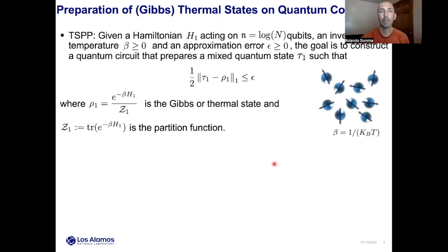We are also given an inverse temperature — a non-negative parameter beta — and an approximation error, a non-negative parameter epsilon, that you can think of as being small. The goal is to construct a quantum circuit, or a sequence of unitary operations, that prepares a mixed quantum state of those n-qubits, which we call tau1, such that it is epsilon away in trace distance from rho1. Here rho1 is the targeted desired thermal state, and z1 is the well-known partition function.